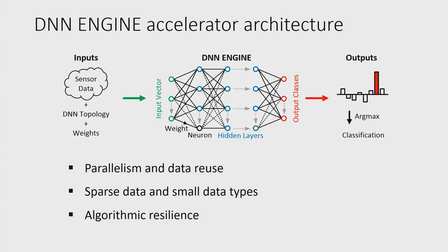In particular, I'm going to describe the DNN Engine, a programmable accelerator for neural networks designed at Harvard. From a computer architecture perspective, neural network algorithms are particularly interesting because of their unique properties: lots of parallelism, opportunities for data reuse, sparse data, small data types, and inherent noise tolerance, which provides algorithmic resilience.